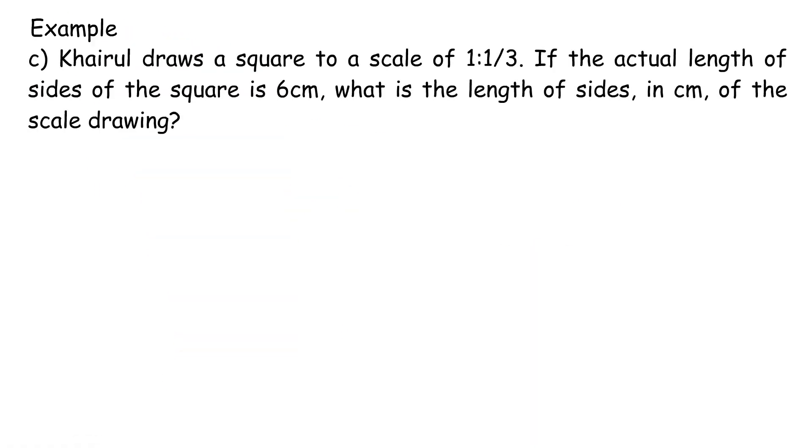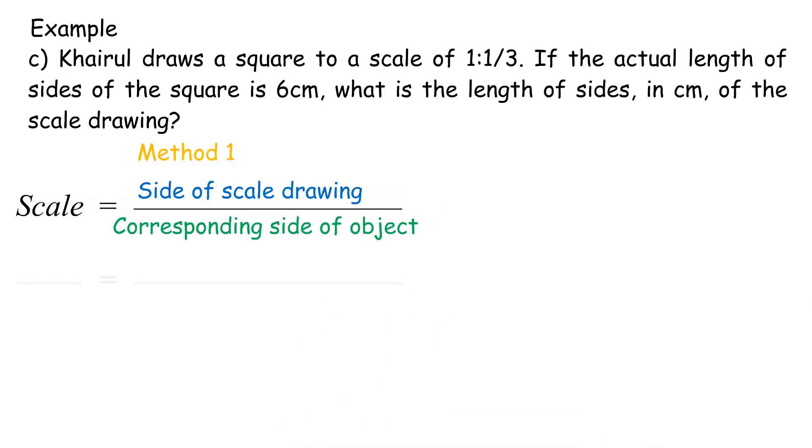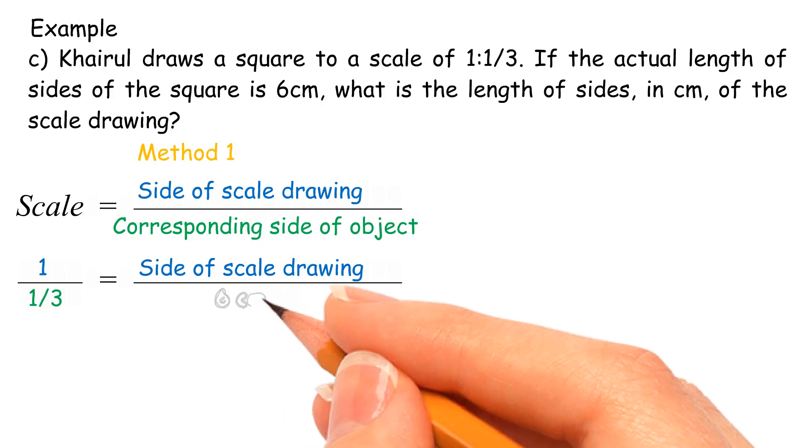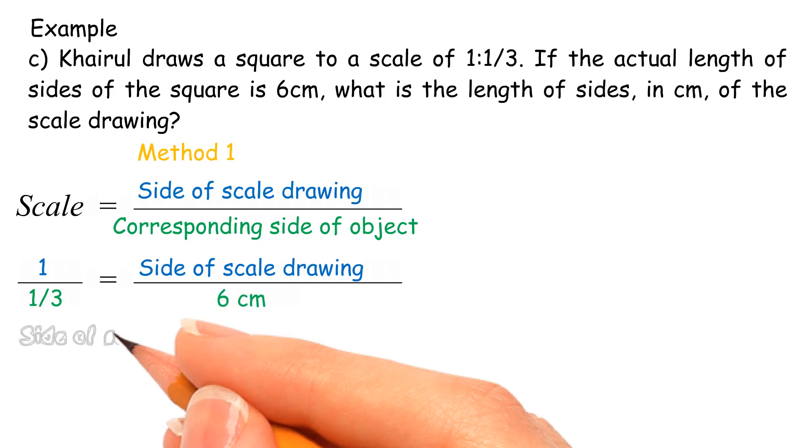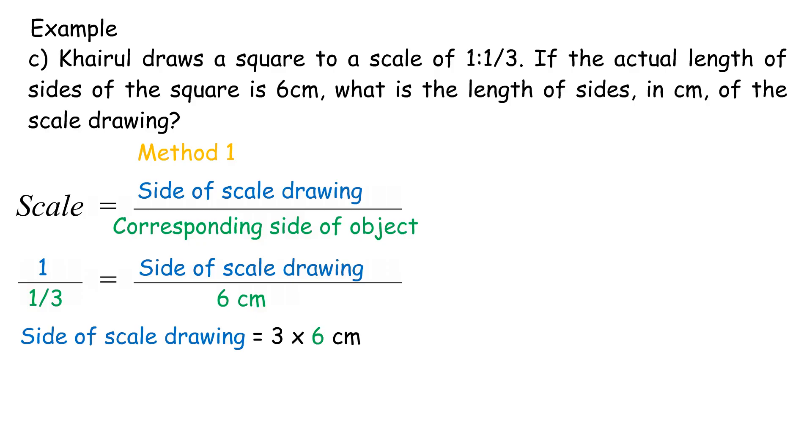Example c: Khairul draws a square to a scale of 1 is to 1 third. If the actual length of sides of the square is 6 cm, what is the length of sides, in cm, of the scale drawing? Method 1: side of scale drawing over corresponding side of object, 1 over 1 third equals side of scale drawing over 6 cm. Side of scale drawing equals 3 times 6 cm. Length of side of scale drawing equals 18 cm.